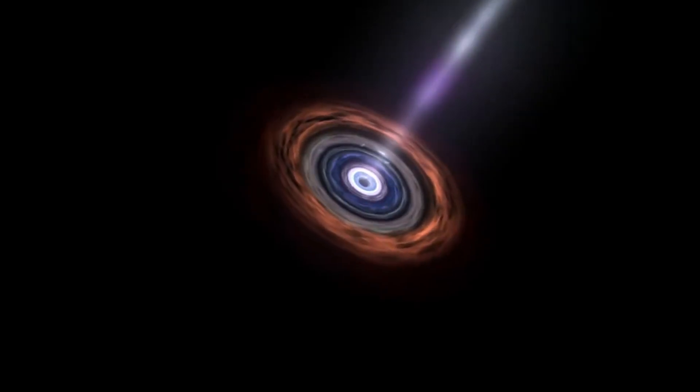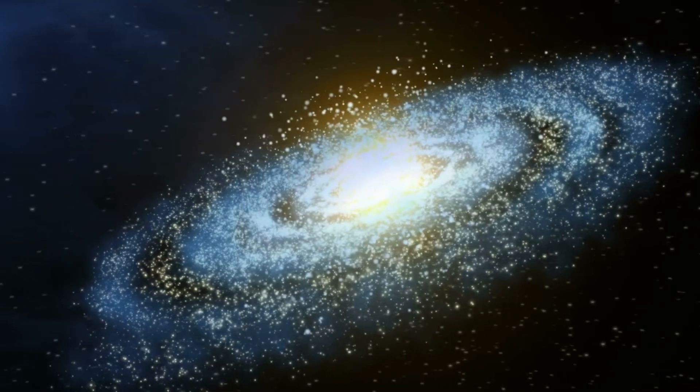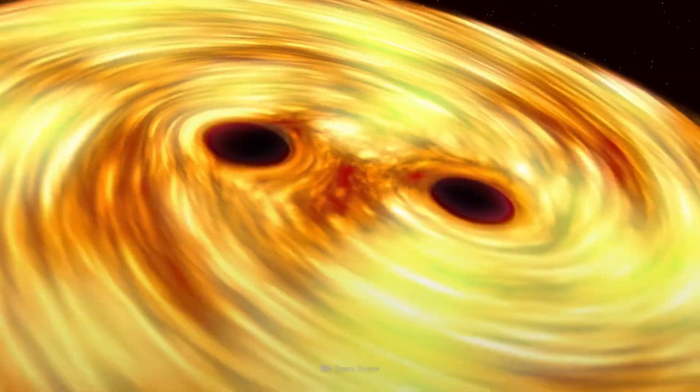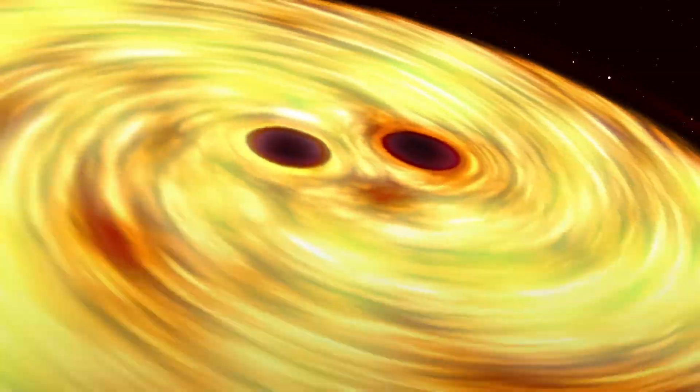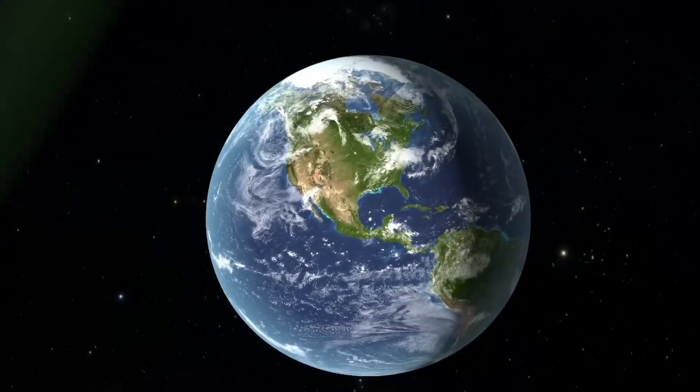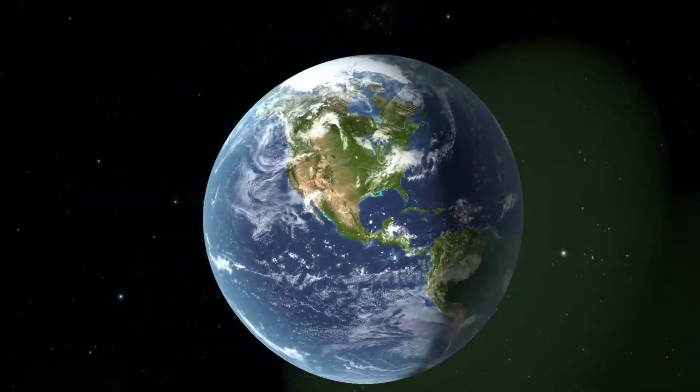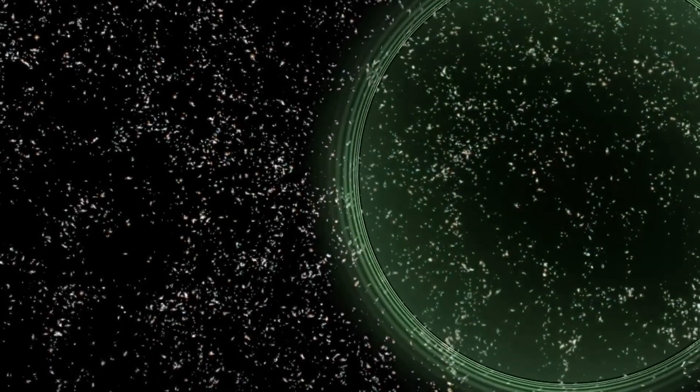So, in a way, black holes are cosmic gardeners, destroying some things, but helping new things grow. Meanwhile, they merge. When two black holes collide, they ripple the very fabric of spacetime, sending gravitational waves that we can now detect on Earth. Those ripples are like fingerprints from the most powerful events in the universe.